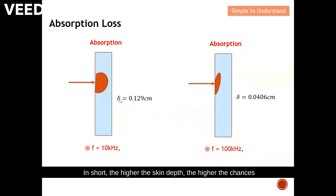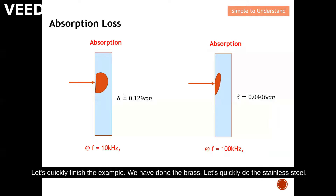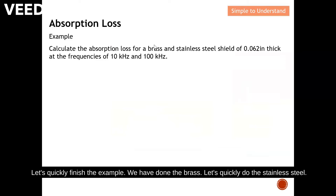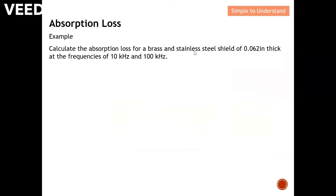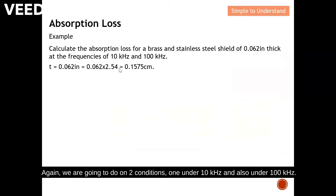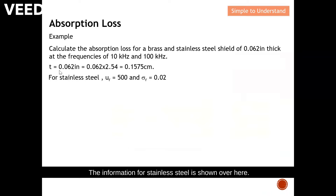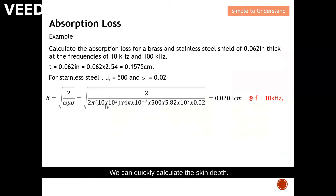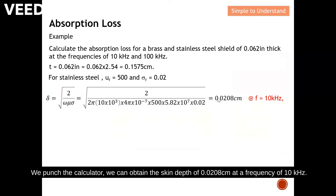In short, the higher the skin depth, the higher the chance that the electromagnetic wave can successfully penetrate the shield. Now let's finish the example with stainless steel under 10 kHz and 100 kHz. The material information for stainless steel is shown here. Punching the calculator, we obtain a skin depth of 0.0208 cm at 10 kHz.